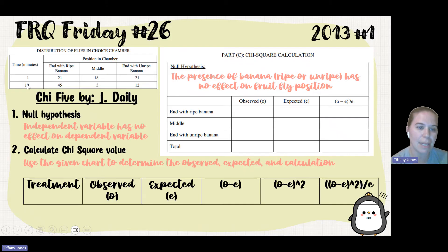But let's fill in this chart. If I look up here, I see that at 10 minutes, I had 45 in ripe, 3 in middle, and then 12 in the unripe, so I fill those in. That gives me a total of 60 flies. Since I expect there to be equal quantities in each of the three positions, I do 60 divided by 3, and that gives me 20. So I put 20 in each of those chambers.